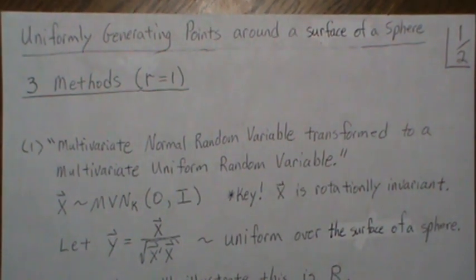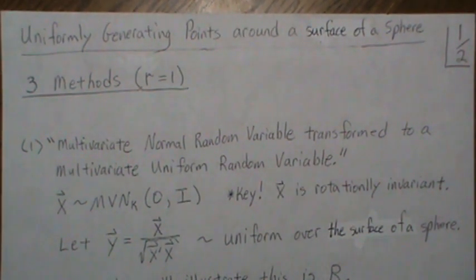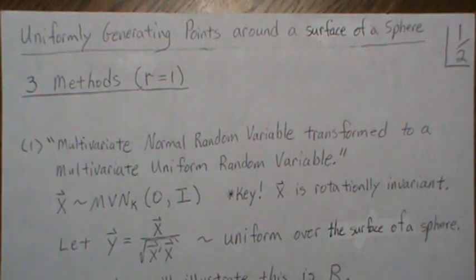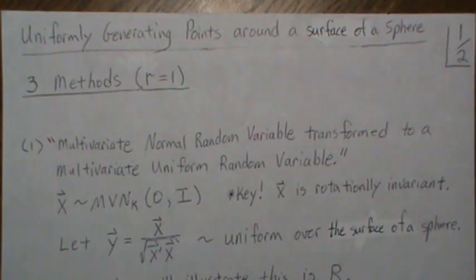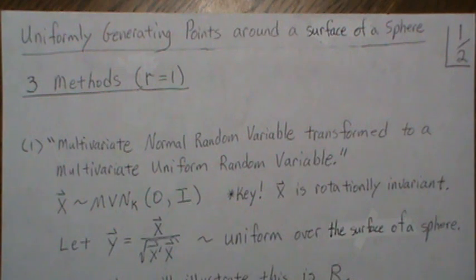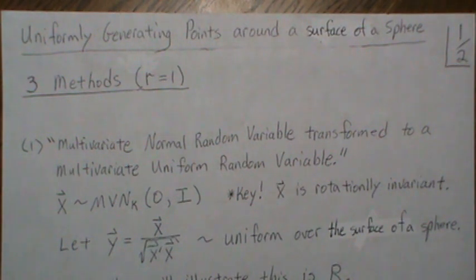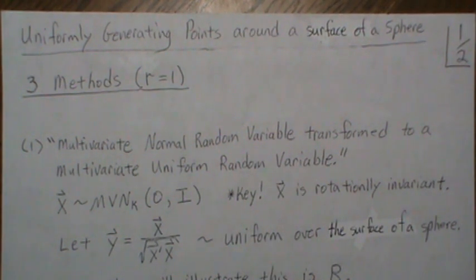In this video we're going to look at uniformly generating points around the surface of a sphere. A brief history of why I'm doing this: my last video put out a video on a multivariate normal random variable transformed to a multivariate uniform random variable, and I thought that was so intriguing that I was going to put a video out showing how to implement it in R, showing some nice graphs of it generating a circle or a sphere.